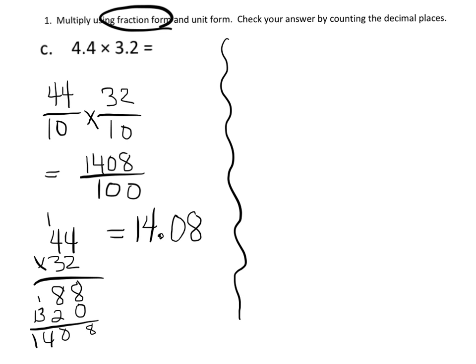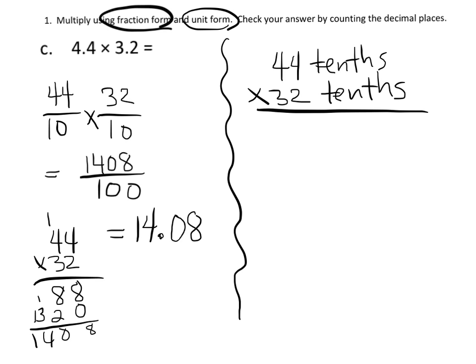Now it says to do it this time using unit form. So we're going to think of this as 44 tenths and 32 tenths. And we're going to multiply. And we already know that answer is 1,408. But then we've got to do tenths times tenths. That gives us hundredths. And 1,408 hundredths is equal to 14 and eight hundredths, or 14.08. Now, let's think about this. Does that answer make sense?